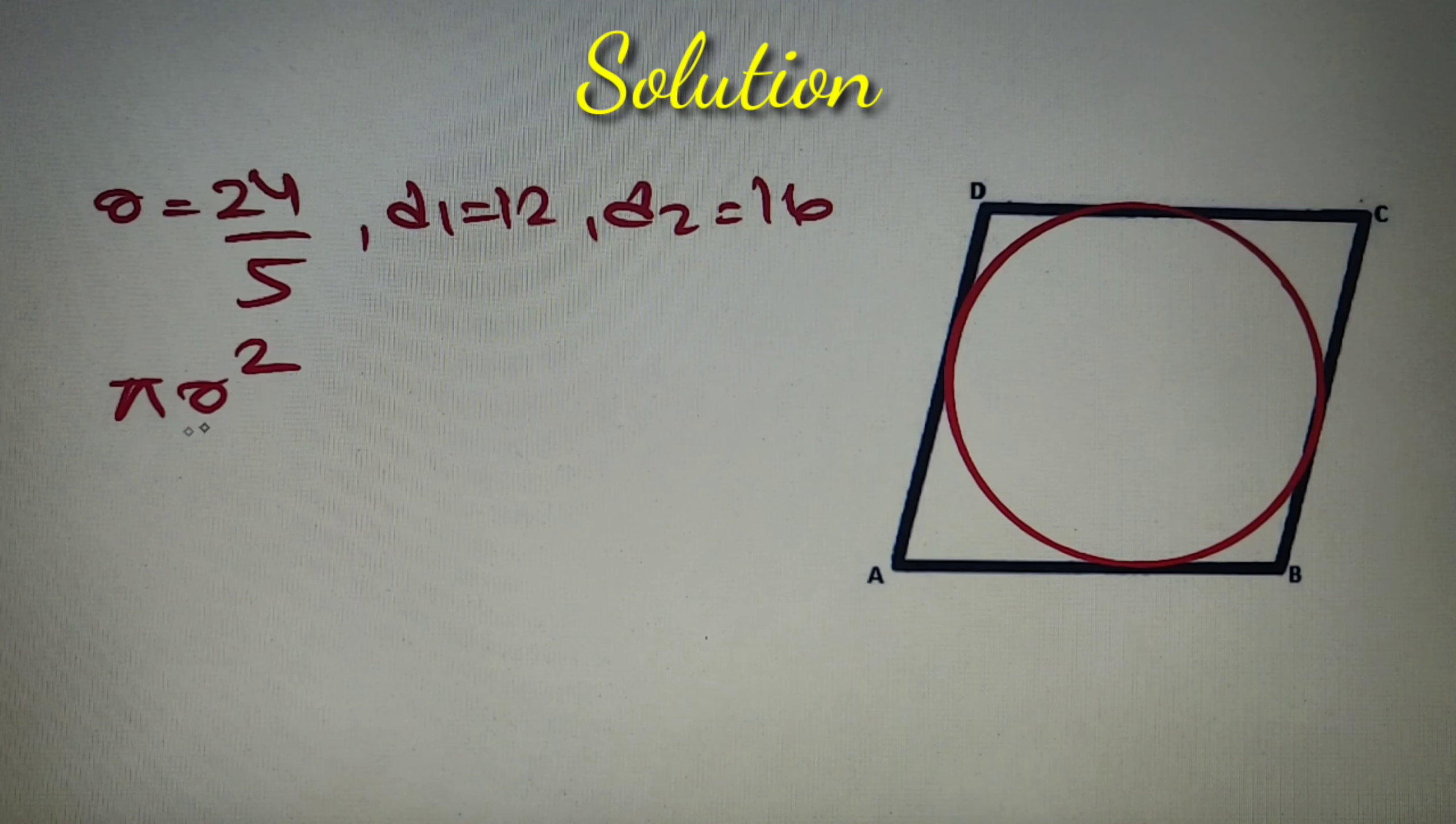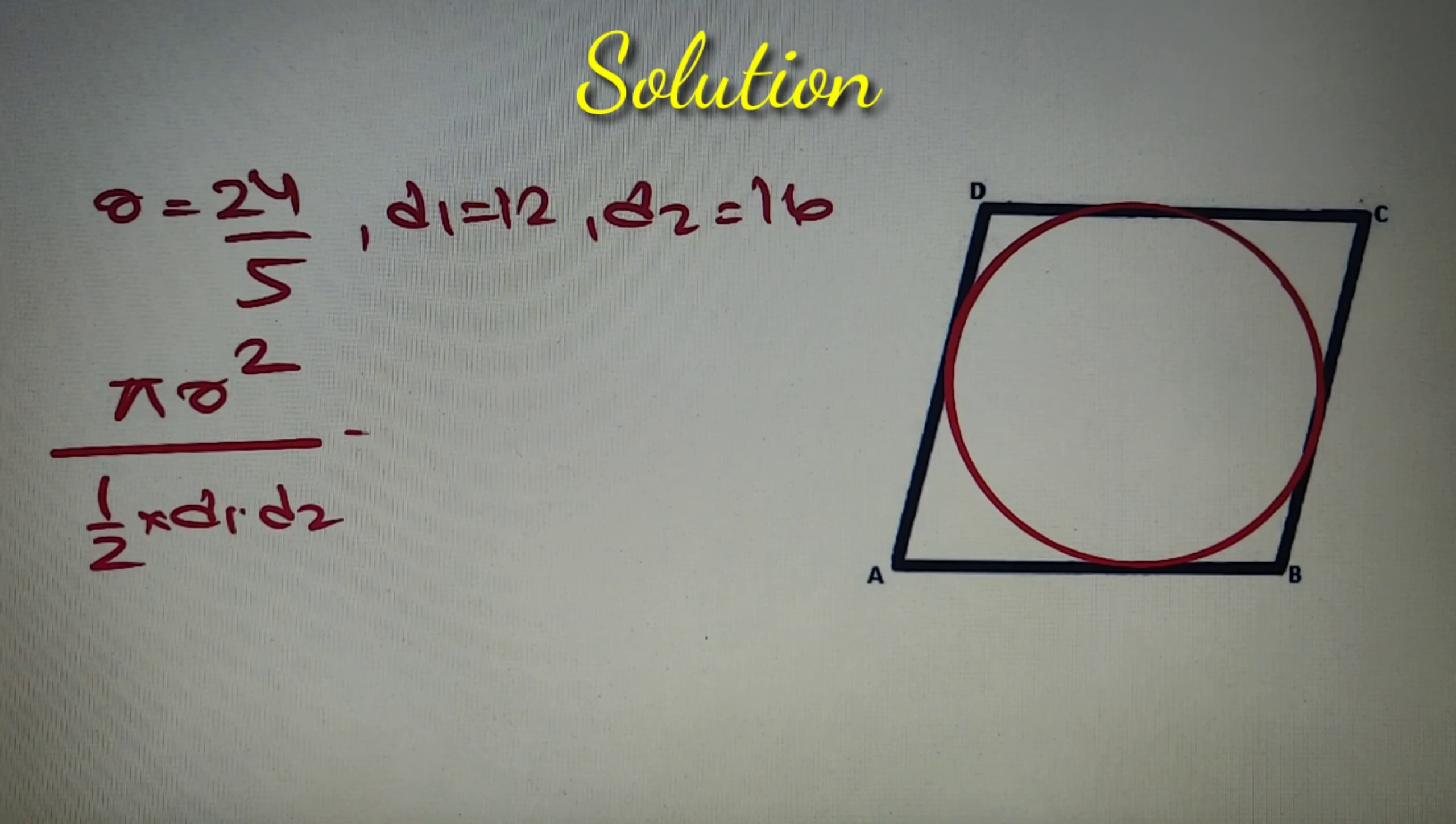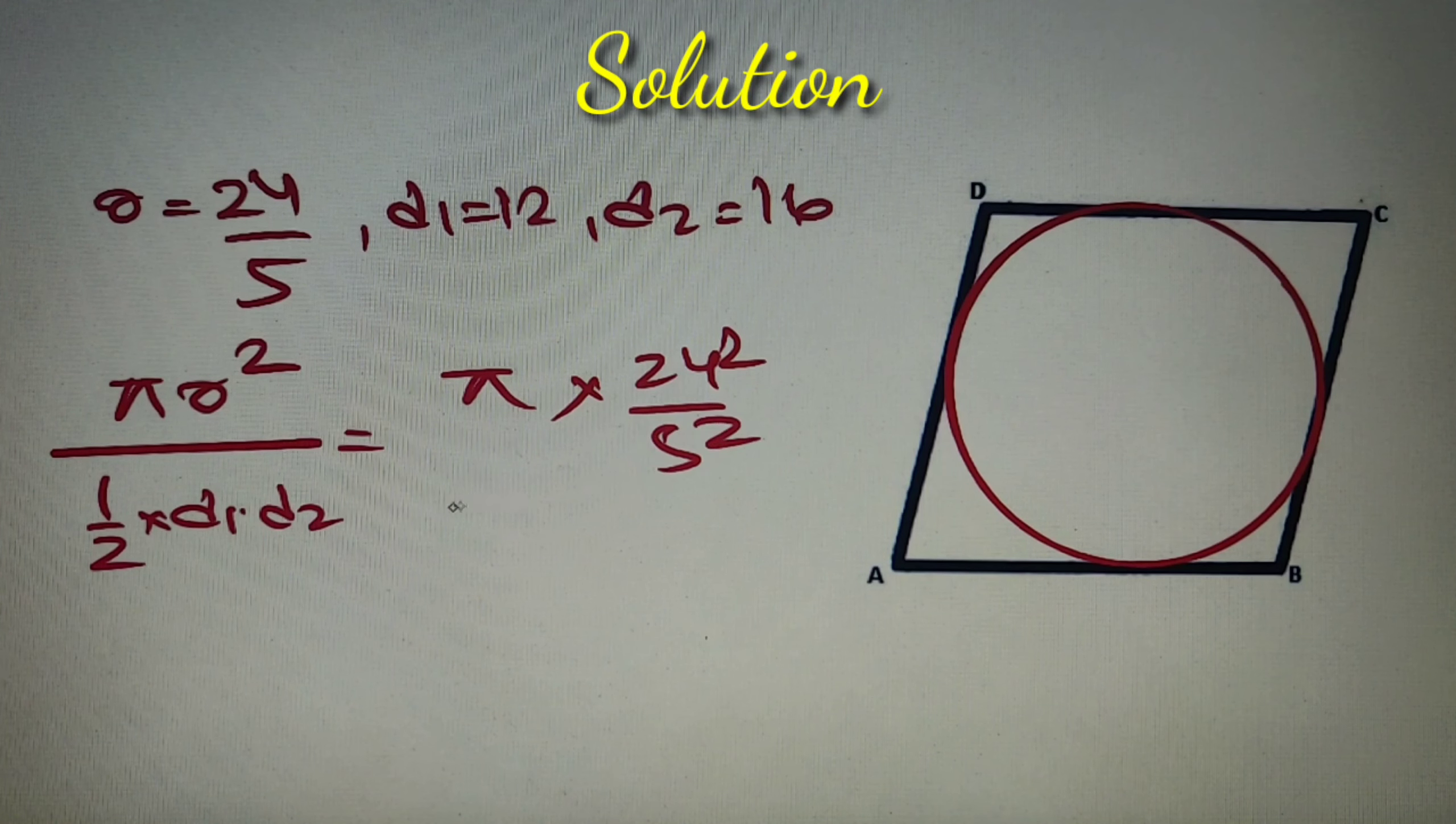D1 is equal to 12 and D2 is equal to 16 as per our given question. Now the area of the circle is equal to pi R square and the area of the rhombus is equal to half into D1 into D2.